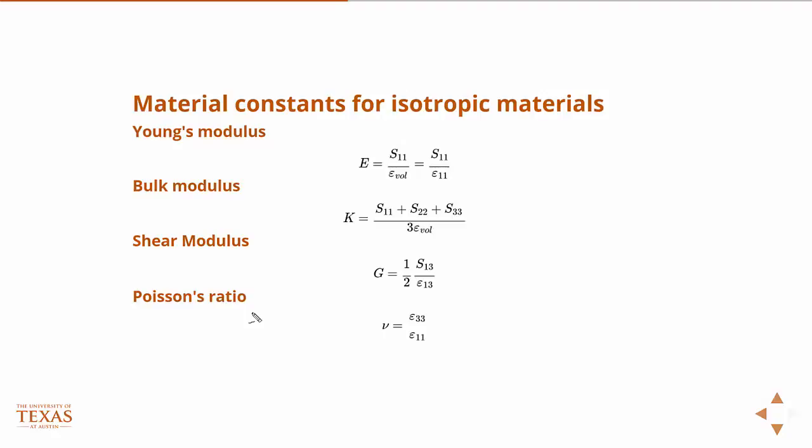So some material constants that we're familiar with as a function of this strain tensor. We've already defined stress previously. Now we have a notion of strain, and we can come up with some of these material constants from that. So our typical Young's modulus - we have a bar, and we apply stress to the end of it, and it causes some strain. But the stress is uniaxial, so the only stress in the stress tensor is S11.